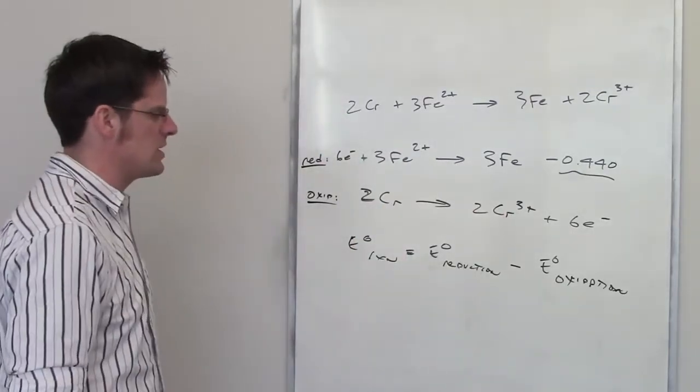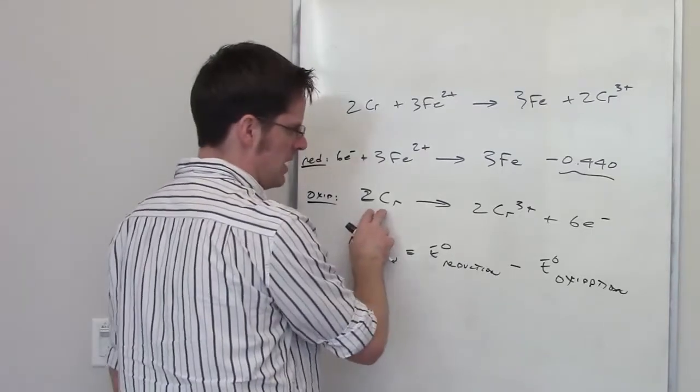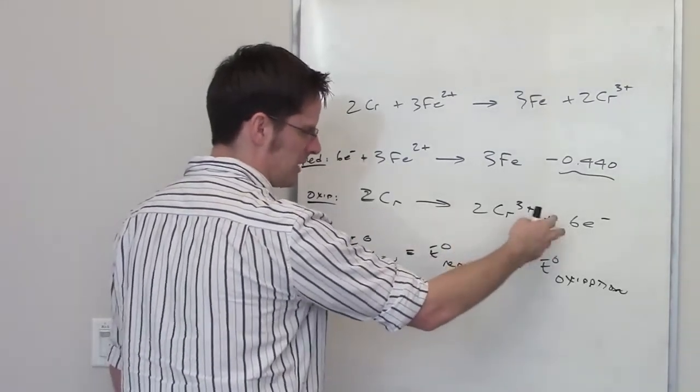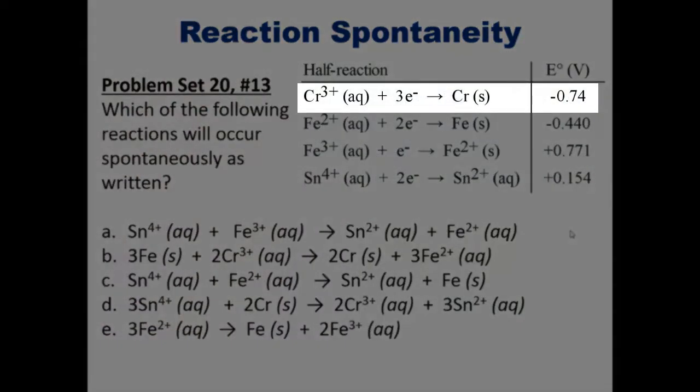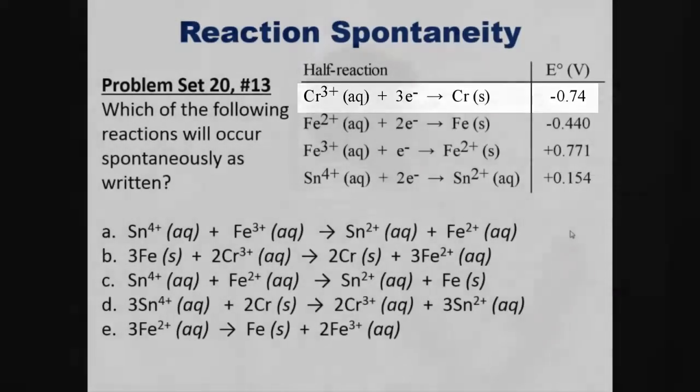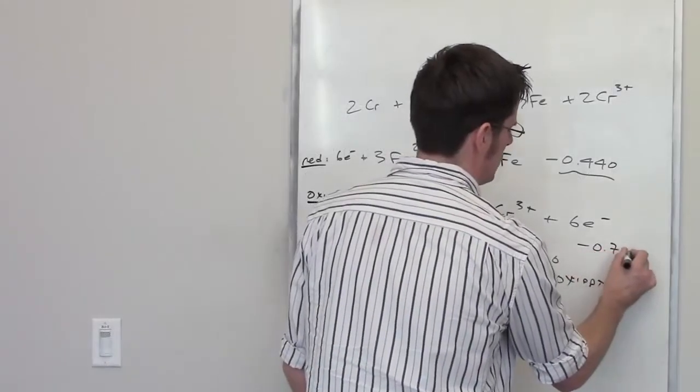Now let's look at the oxidation. The oxidation, I've got chromium, and I've got Cr3+ and some electrons. Electrons on the right side. Looking back at our table here, do you see any of these reactions that have got Cr3+ and some electrons on one side and then Cr0 on the other? Yeah, you can see this top one here with a number of negative 0.74.